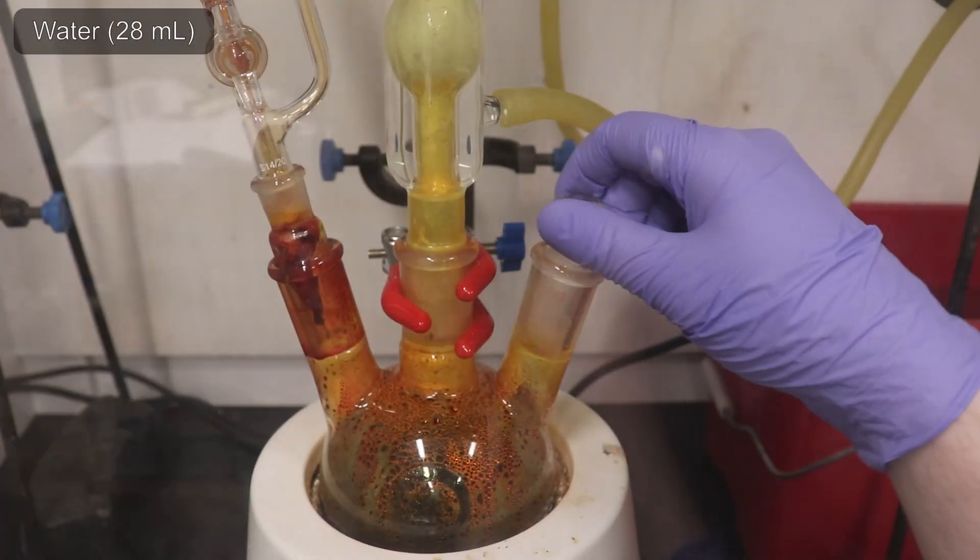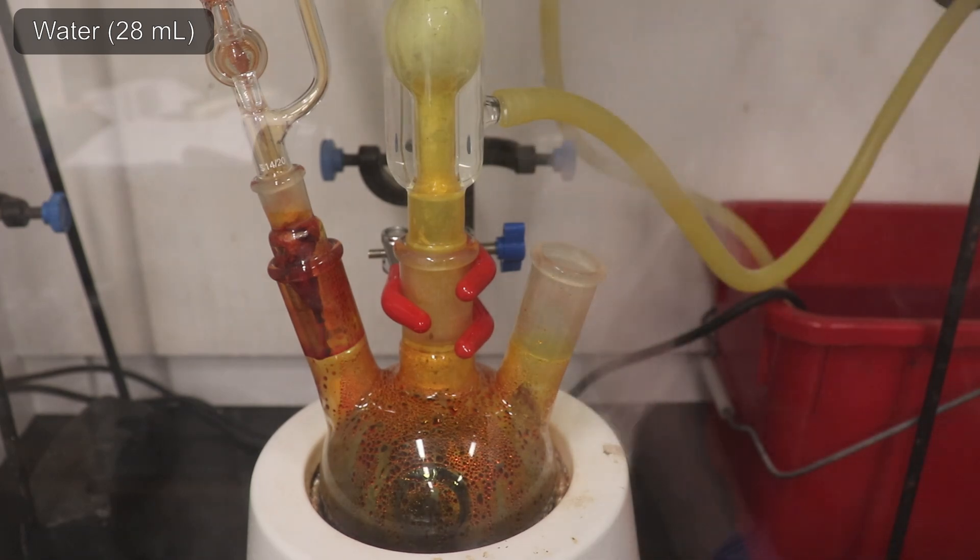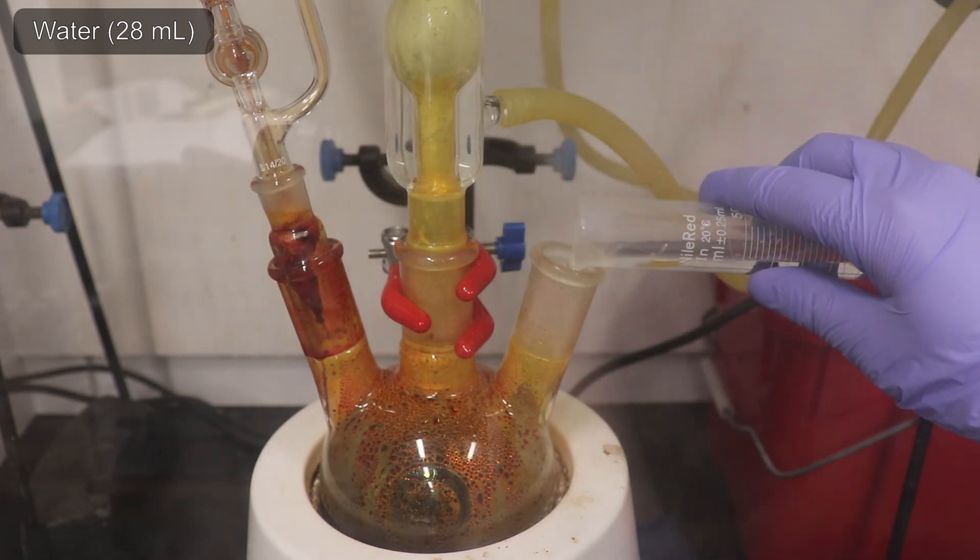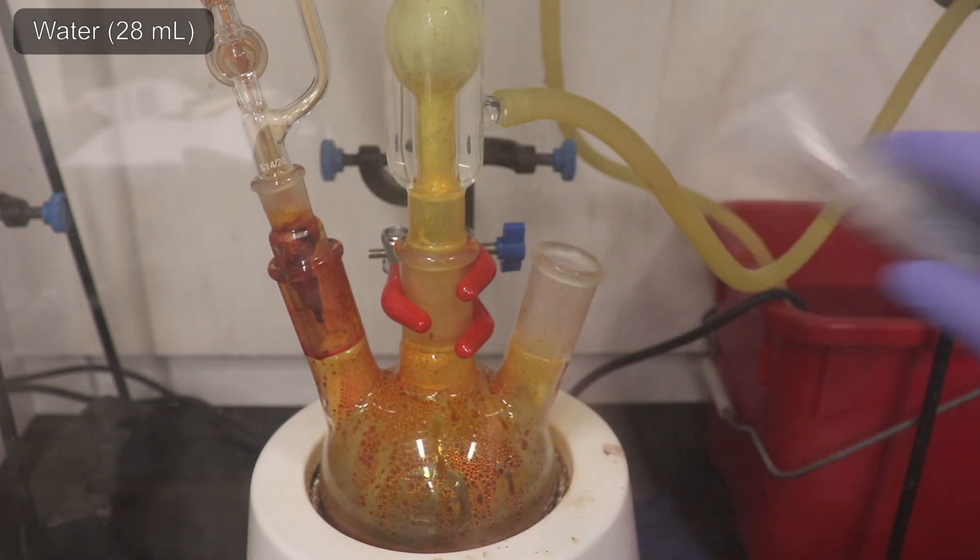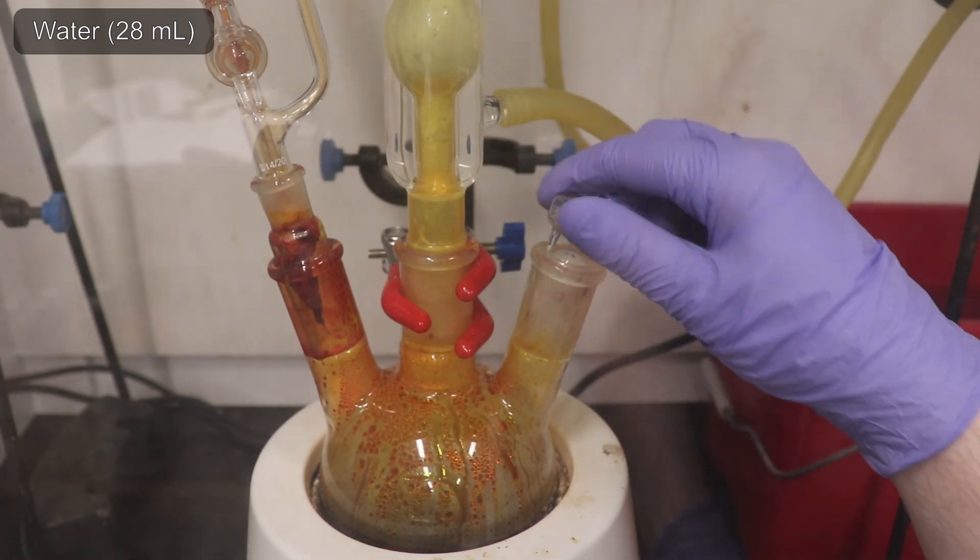Once the bromine addition was completed, I opened the flask, which released quite a bit of hydrogen bromide vapor, and quickly added 28 mL of water before sealing the flask back up.